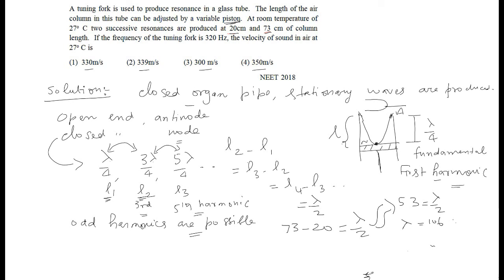So, what is asked? Velocity. We know that velocity is n lambda. What is n? Given in the question, 320 Hz. Length is 106 cm but convert into meter. So, this would be the answer: 320 into 1.06.